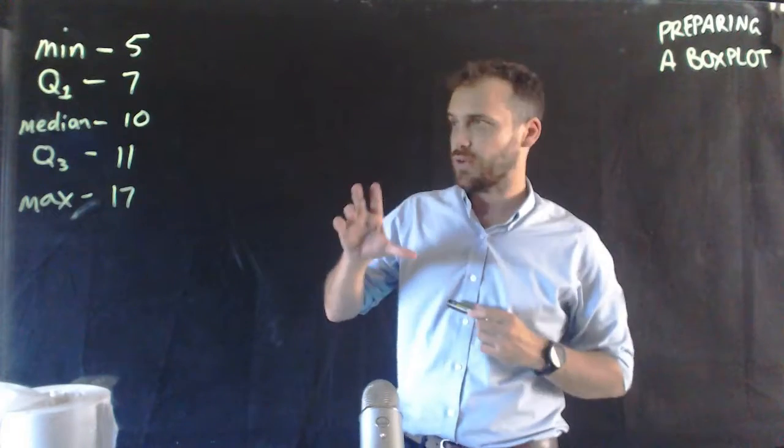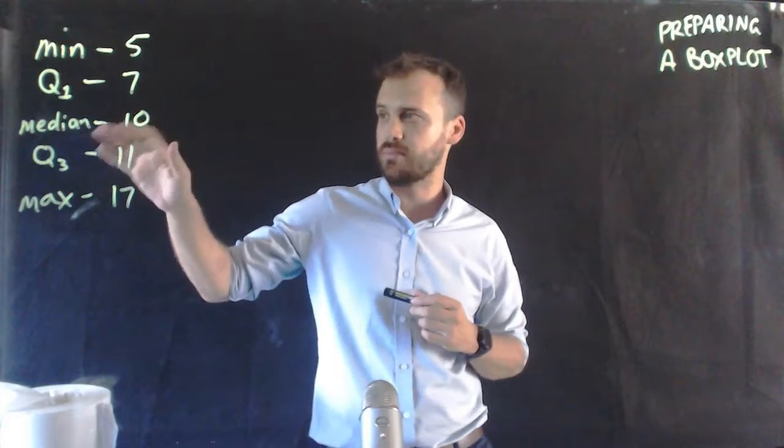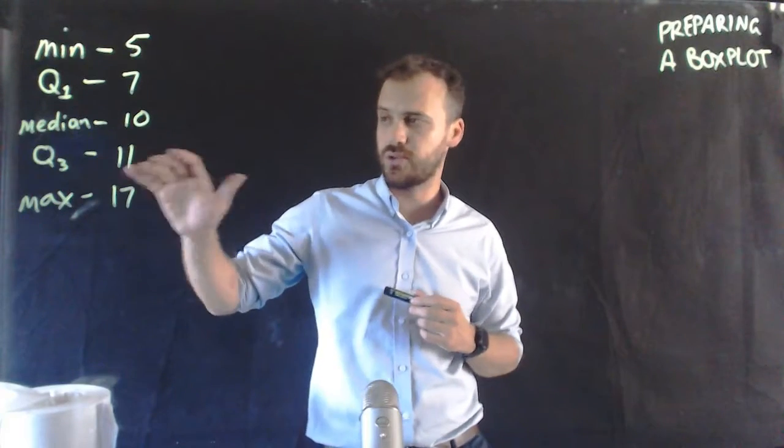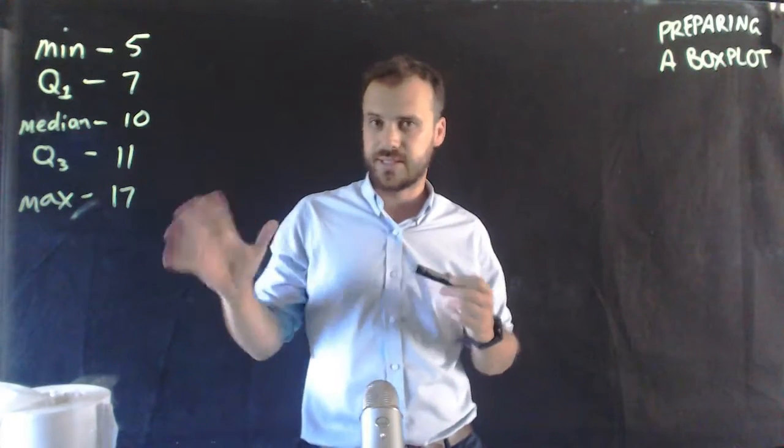Here's our five number summary: minimum 5, Q1 7, median 10, Q3 11, max 17.